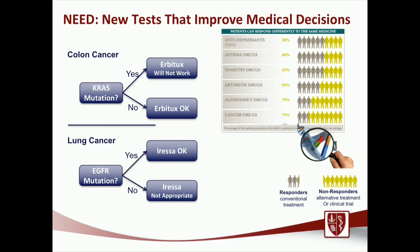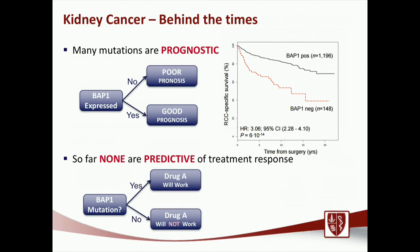Kidney cancer is a little bit behind the times, but this is changing rapidly. We know that many mutations are prognostic — for example, having expression of BAP1 is good prognosis, but if it's mutated, that's associated with a bad prognosis. So far, however, we've not been able to identify any mutations that are predictive — meaning if you have this mutation, you're more likely to respond to a certain drug. That's really the ultimate goal in the genomics of kidney cancer.